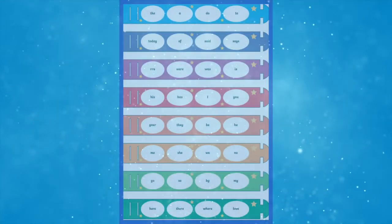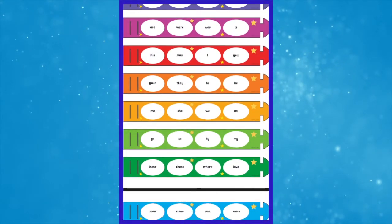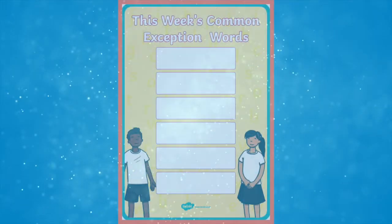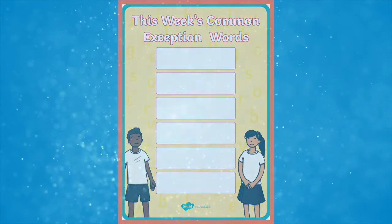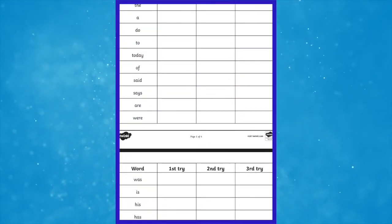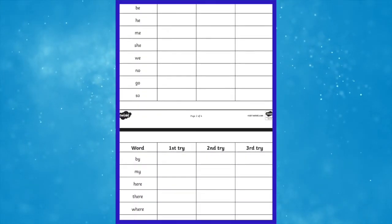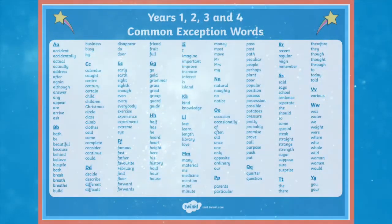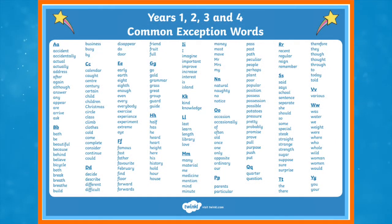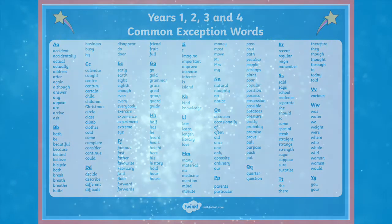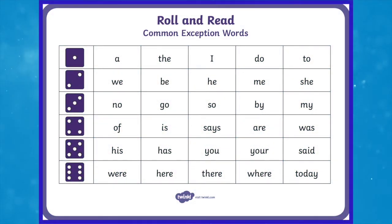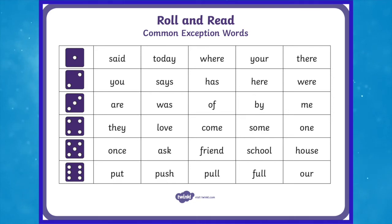To continue to extend children's understanding of Common Exception Words, these resources will come in handy. The Year 1 and 2 Common Exception Words resources are: the Year 1 Spelling Practice Common Exception Word Homework Worksheet, the Common Exception Words Years 1, 2, 3 and 4 Alphabet Match, and finally the Common Exception Words Years 1 and 2 Read and Roll Match Activity Pack. So, you're spoiled for choice when it comes to picking from our many Common Exception Word resources.